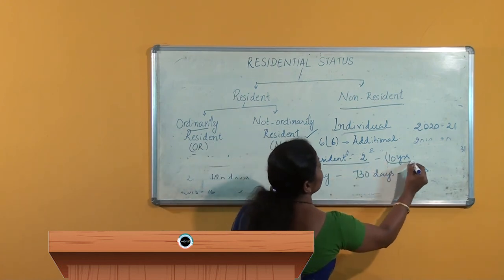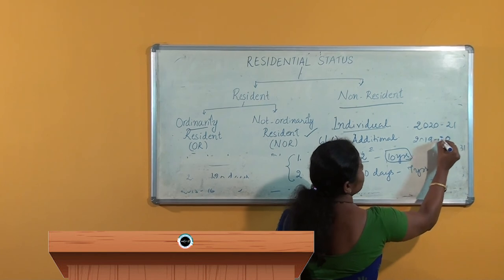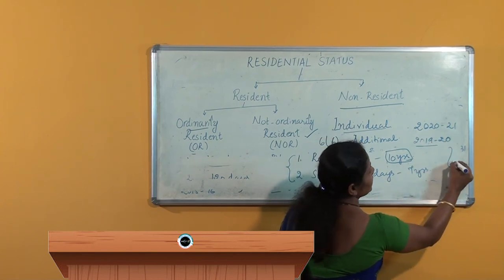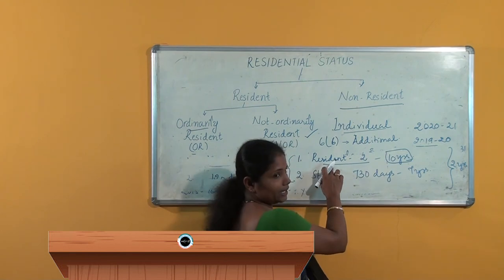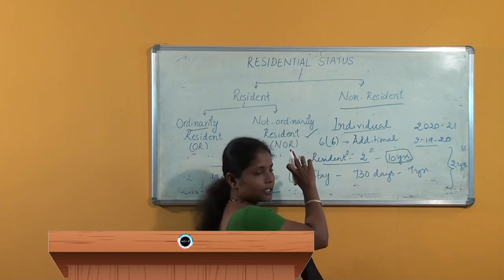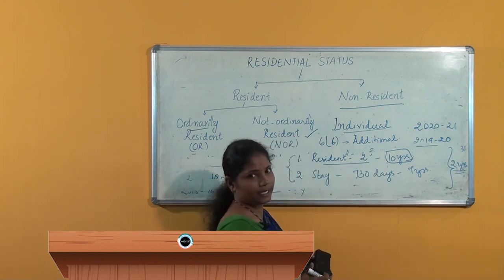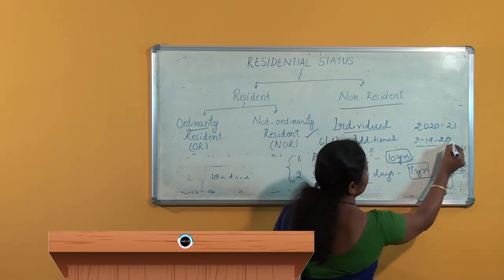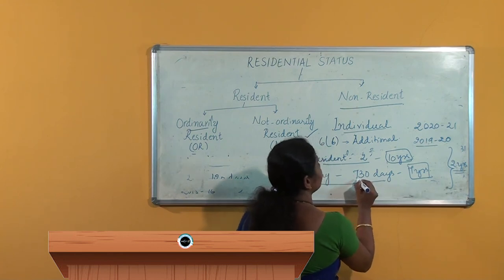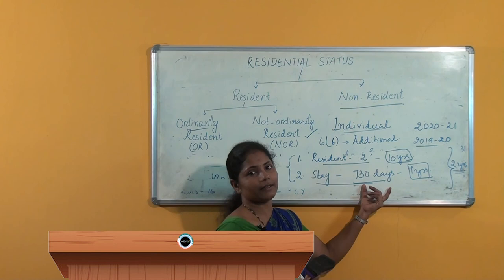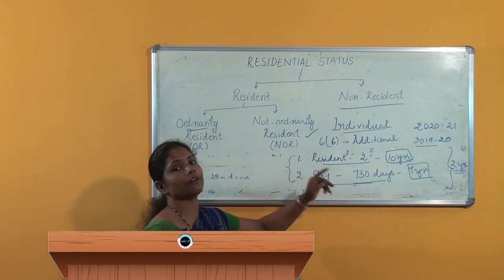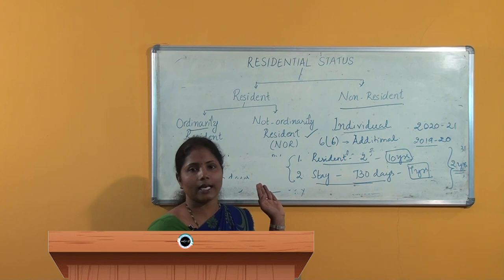These 10 years are preceding the previous year; if the previous year is 2019–20, we consider the 10 years preceding it, and out of those 10 years, at least 2 years he must have been a resident. For becoming a resident he must have fulfilled the basic conditions already specified. Additionally, out of the 7 years preceding 2019–20, he must have stayed in India for at least 730 days. If he fulfills both conditions he becomes ordinarily resident; if he fails to fulfill any one condition, he becomes not ordinarily resident.